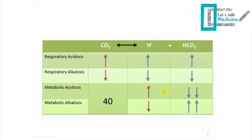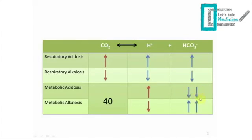In metabolic acidosis, the cause can come from either hydrogen ions or bicarbonate. It could be either an increase in hydrogen ions or a decrease in bicarbonate. If we have an increase in hydrogen ions, the equation moves to the left, which will decrease the bicarbonate. In metabolic pathologies, the bicarbonate change is significant — remember that.